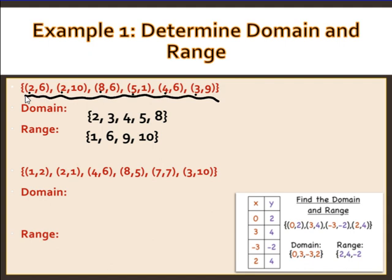Then the range — the range is always your y. So the range from this first set is {1, 6, 9, 10} — just the second number in each pair. Note there are multiple sixes, but we only write it once.